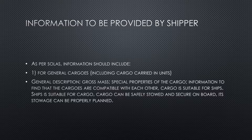For general cargoes, including cargo carried in units, the information should include: a general description of the cargo, the gross mass or gross weight to be loaded, special properties of the cargo if any, including whether the cargoes are classified as dangerous goods, information on whether the cargoes are compatible with each other, whether the ship is suitable for the cargo, and how the cargo can be safely stored and secured on board.